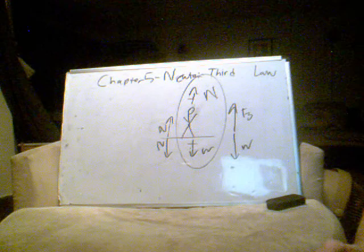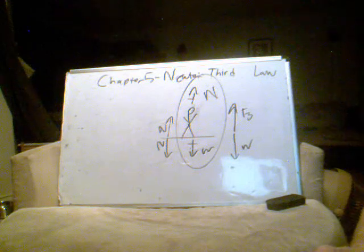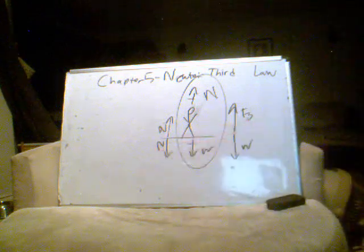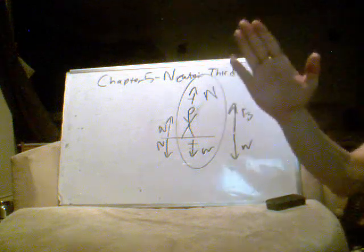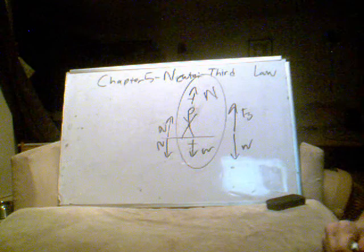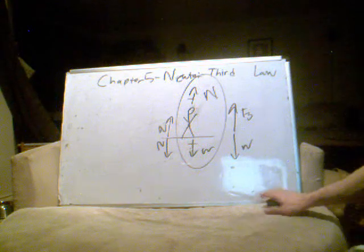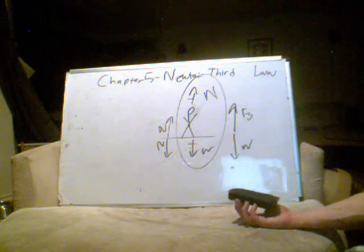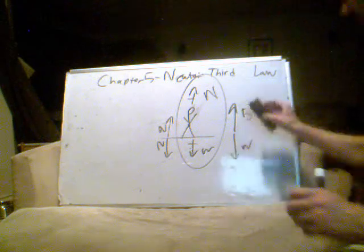Just like friction, the normal force only comes into being when two surfaces come into contact. But why do we accelerate more down a steeper hill? Obviously because there is more force accelerating us down a steeper hill — more of the force is accelerating us, and less is being taken up by the component perpendicular to the surface.